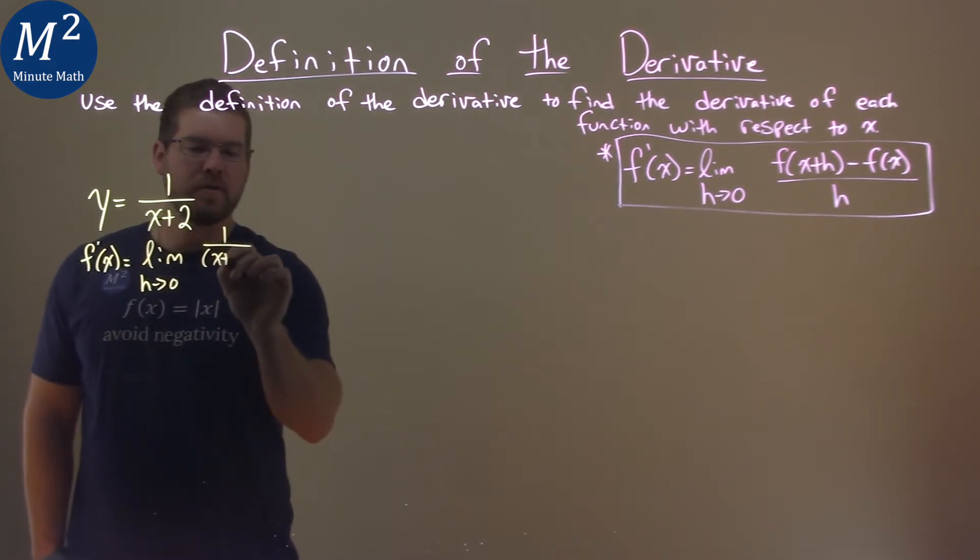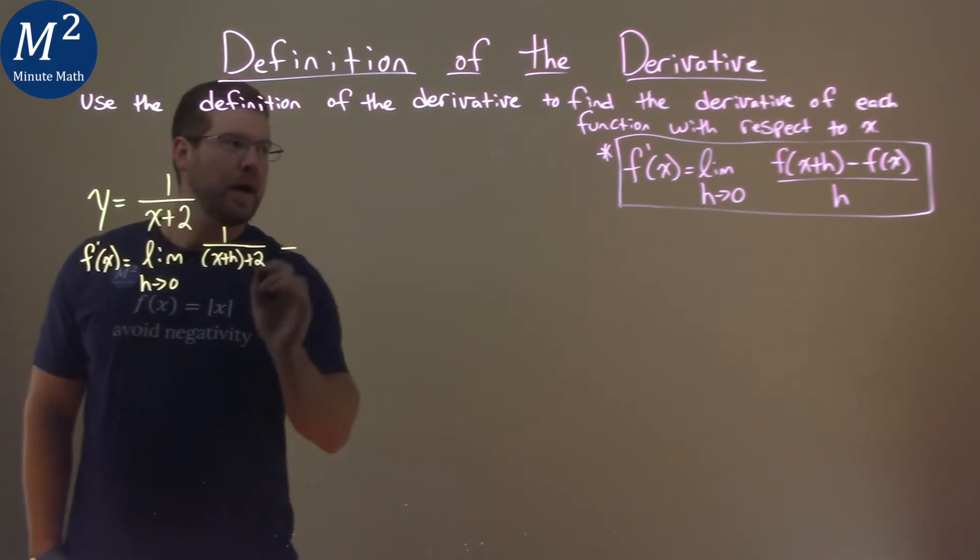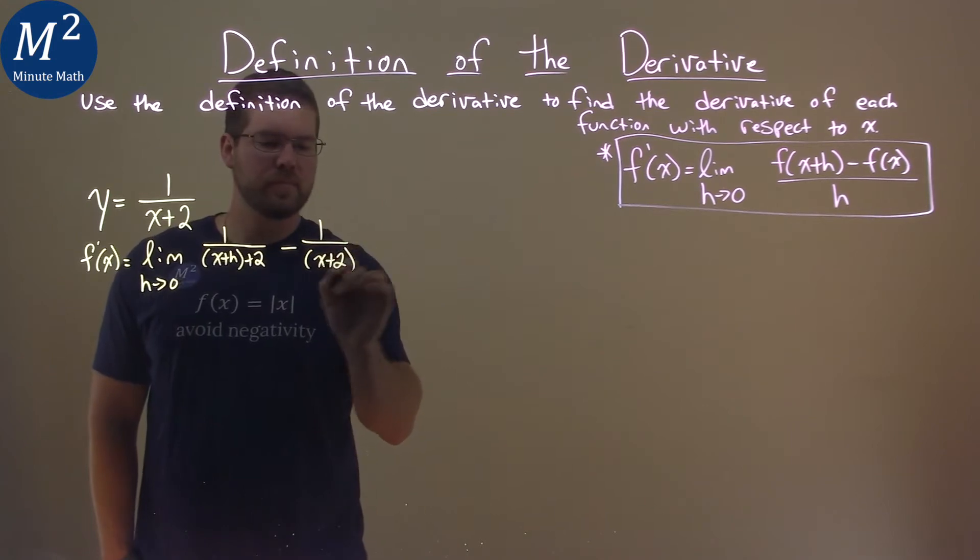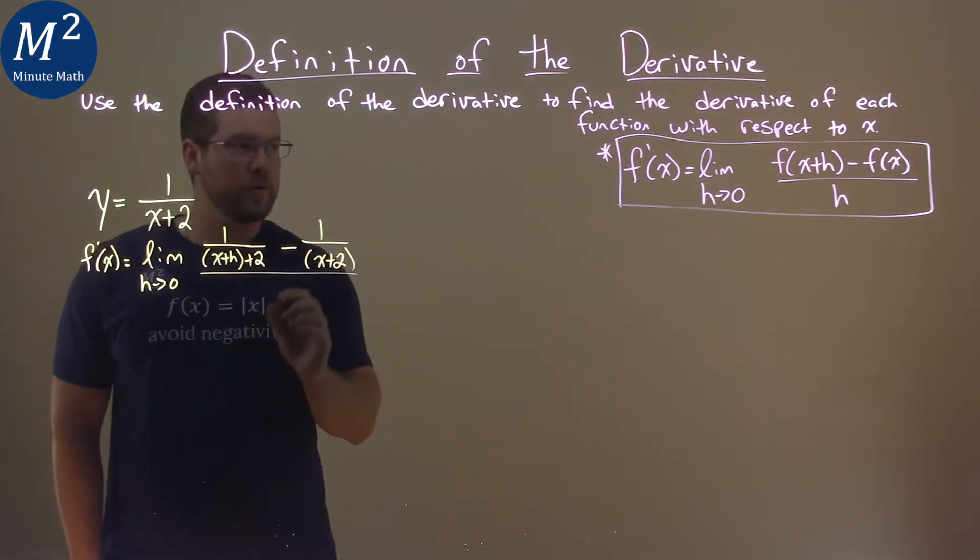So 1 over x plus h plus 2, like that, minus the function itself, 1 over x plus 2, all over h.